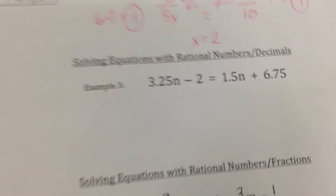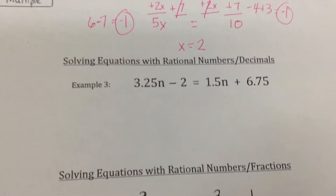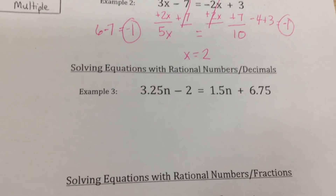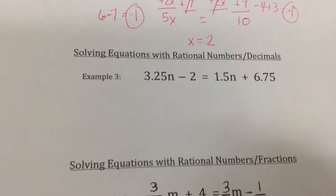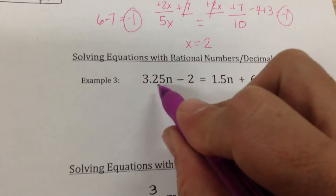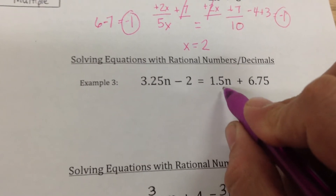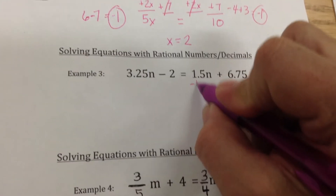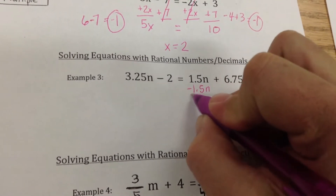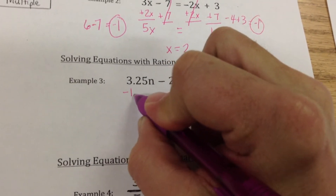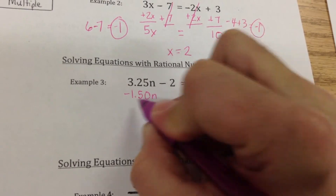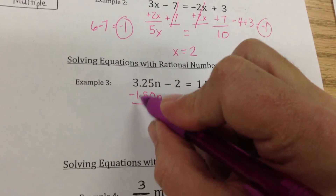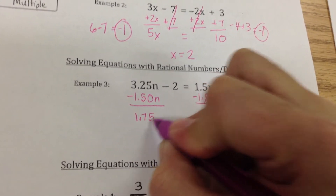Now we're going to do this with decimals. I don't want you to think that because we're using decimals, some different rules apply — the rules are exactly the same. I've got 3.25n and 1.5n, and I want to get rid of the 1.5n. So I'm going to subtract 1.5n from both sides, making sure to line up my decimals — in this case I'd add a zero. That cancels out this side, and over here when I do the math I get 1.75n.